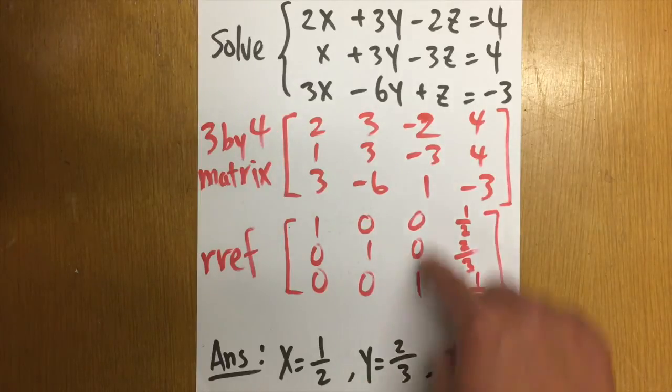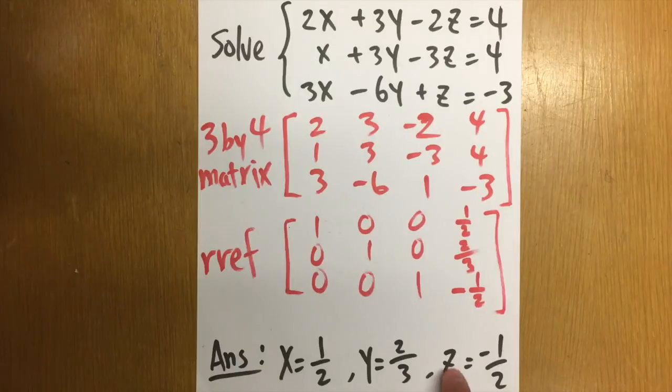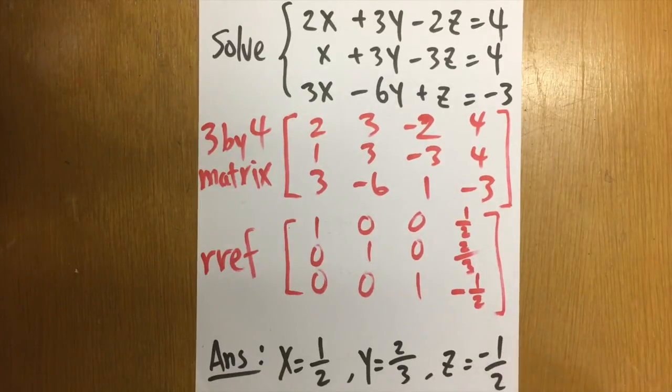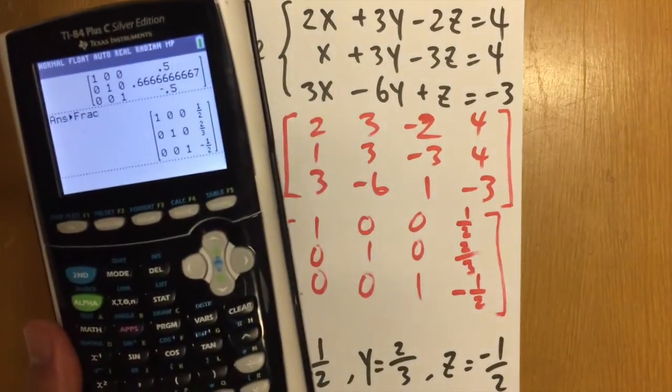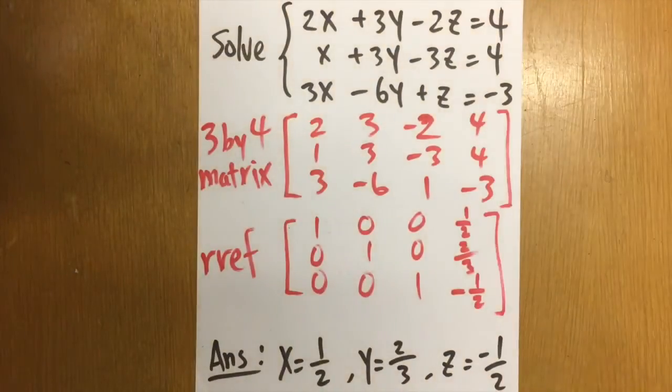And for the last one, this is the Z column, so of course, Z is equal to negative 1 half. And there you have it. This is the answer to this system of equations. That's it.